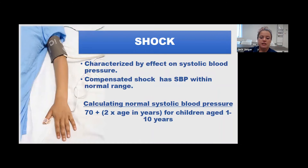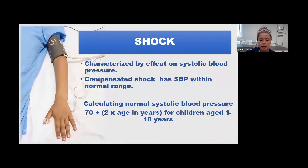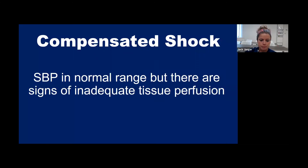Shock is characterized by its effect on systolic pressure. Compensated shock has a systolic blood pressure within normal range. For children aged 1 to 10, calculate it as 70 plus two times their age in years. For over 10, use adult parameters. For less than 1, the goal is for systolic blood pressure to be greater than 70. Compensated shock means blood pressure is in normal range, but there are signs of inadequate tissue perfusion.